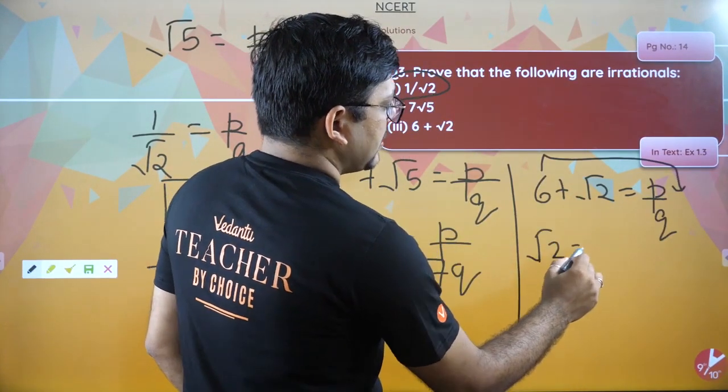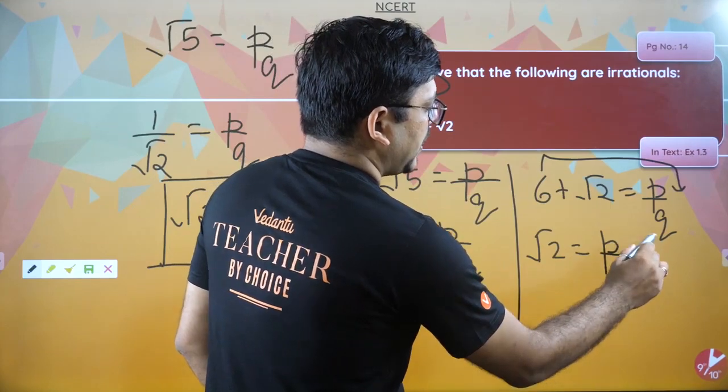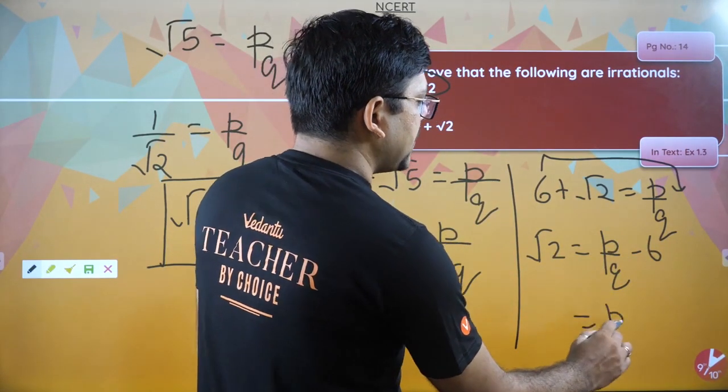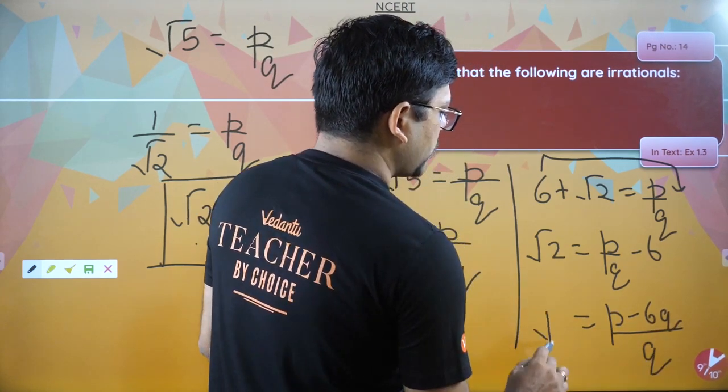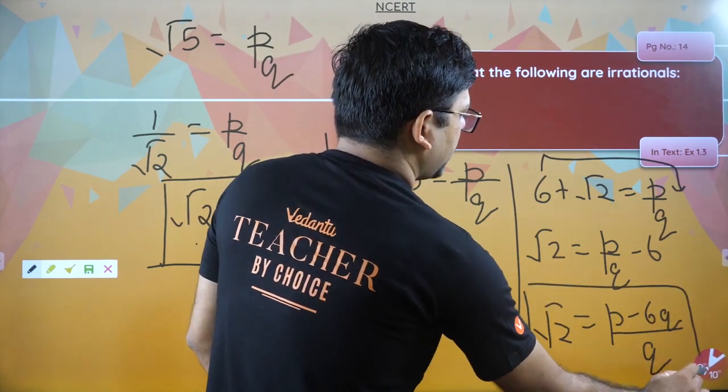So you will have root 2 equals p by q minus 6. This q will go here: you will have p minus 6q upon q equals root 2. So we got this.